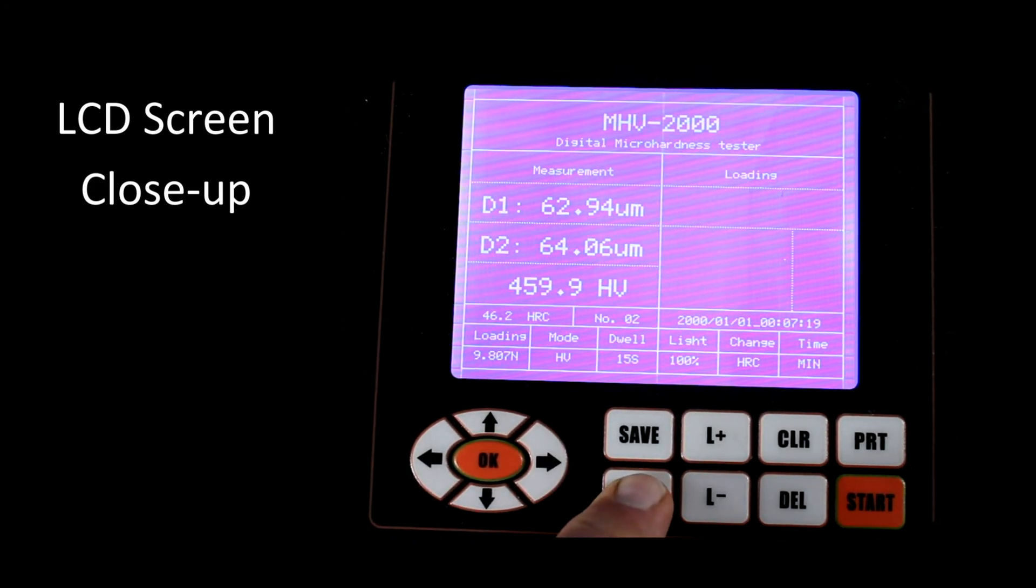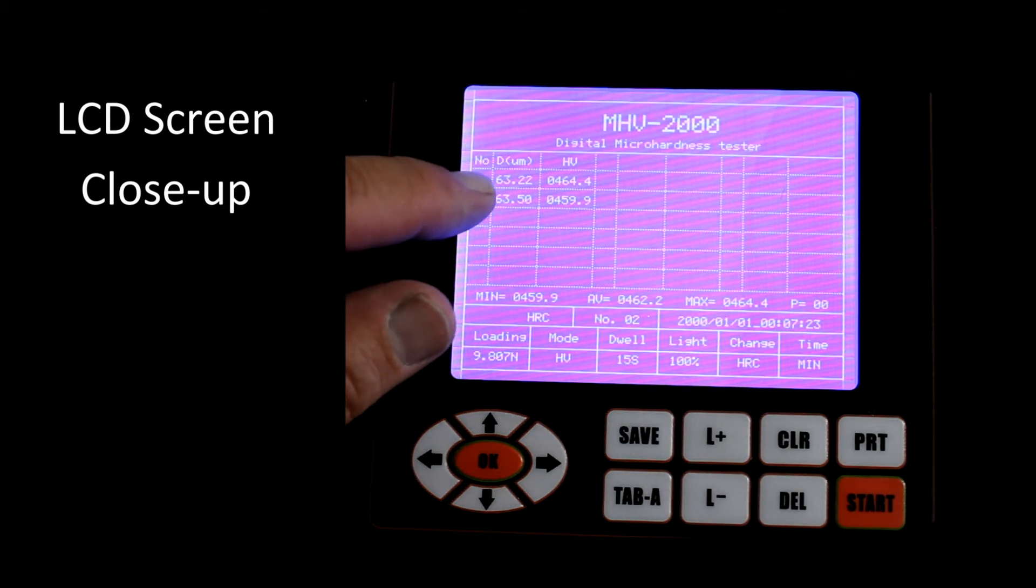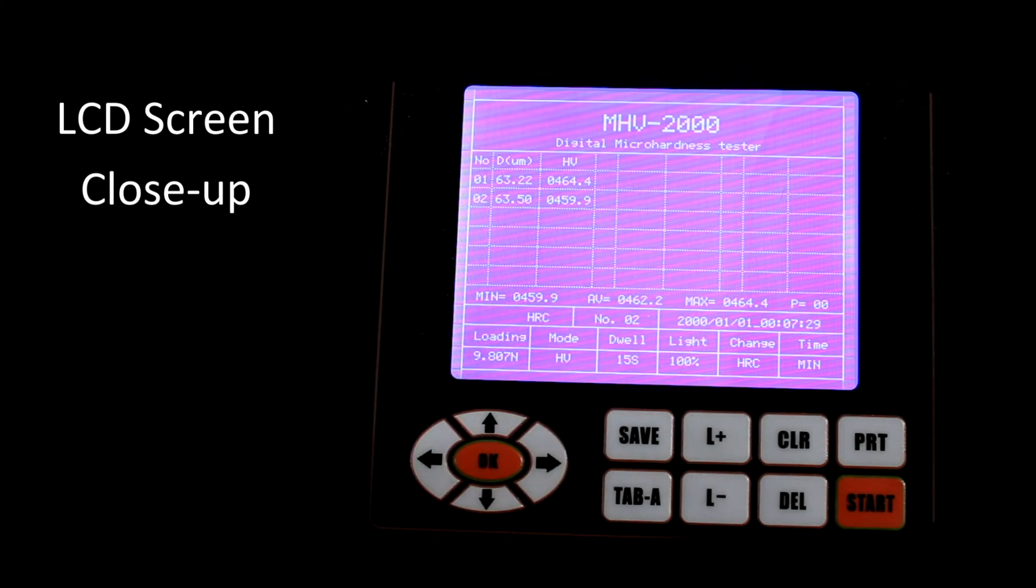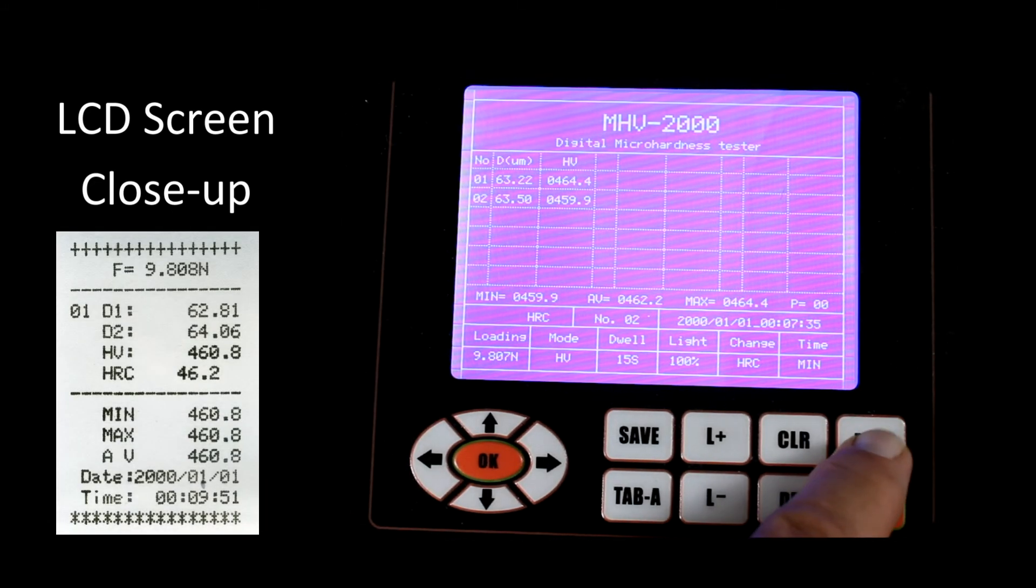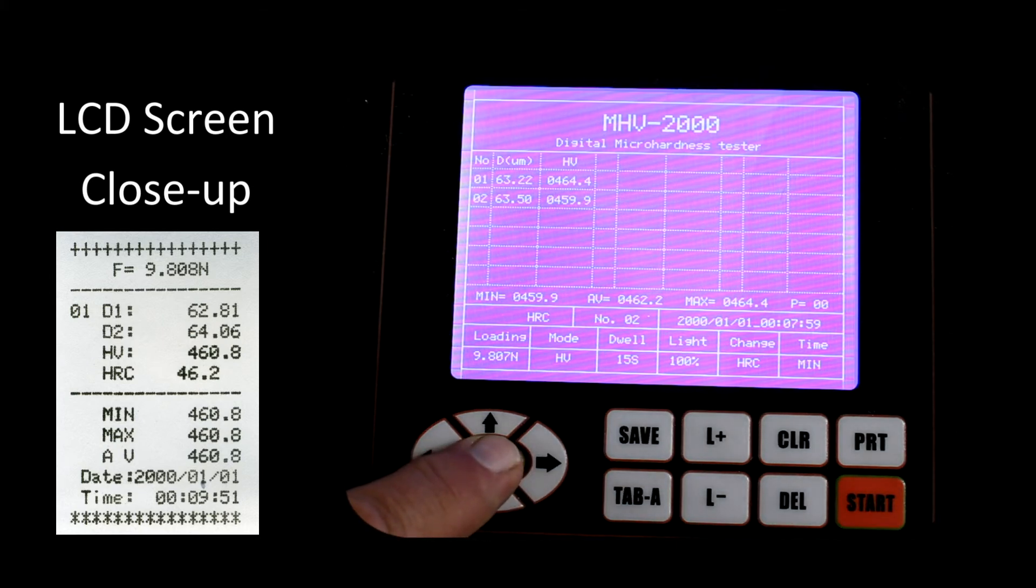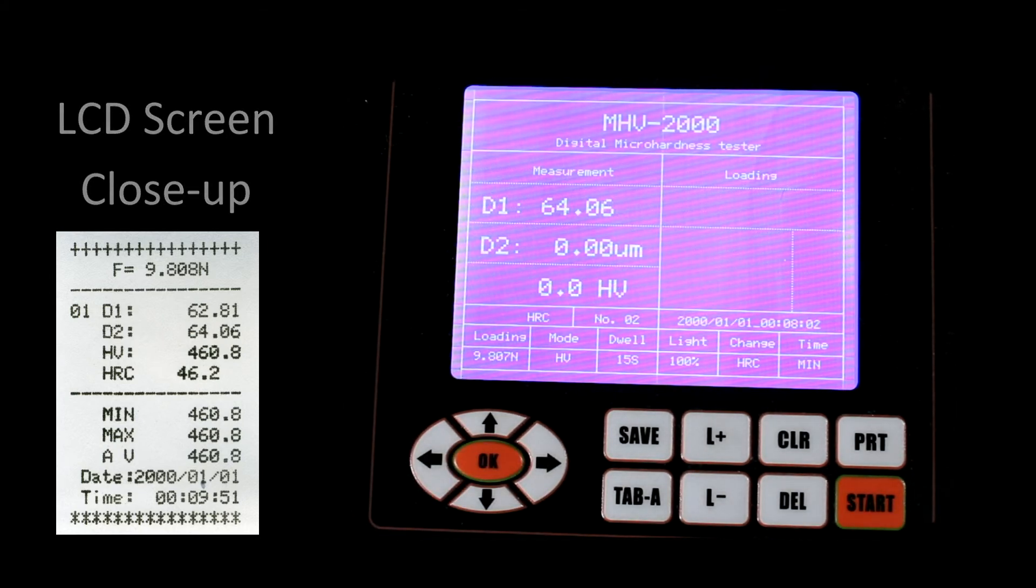Now pressing tab A, we can go into the menu and we can see the measurements that we've already made. And then there's a minimum, average, and maximum. If this is all the measurements that we want to take and we want to print out the results, we can now go to the print button. And we hear the printer printing out the results. By pressing OK, we can get back to the primary screen.